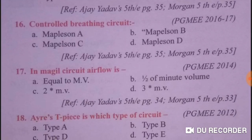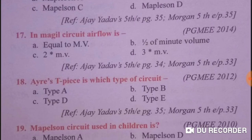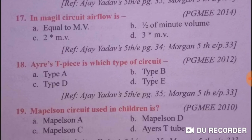The controlled breathing circuit is Mapleson D — answer is Mapleson D. In the Medzile circuit, air flow is equal to minute volume (MV).